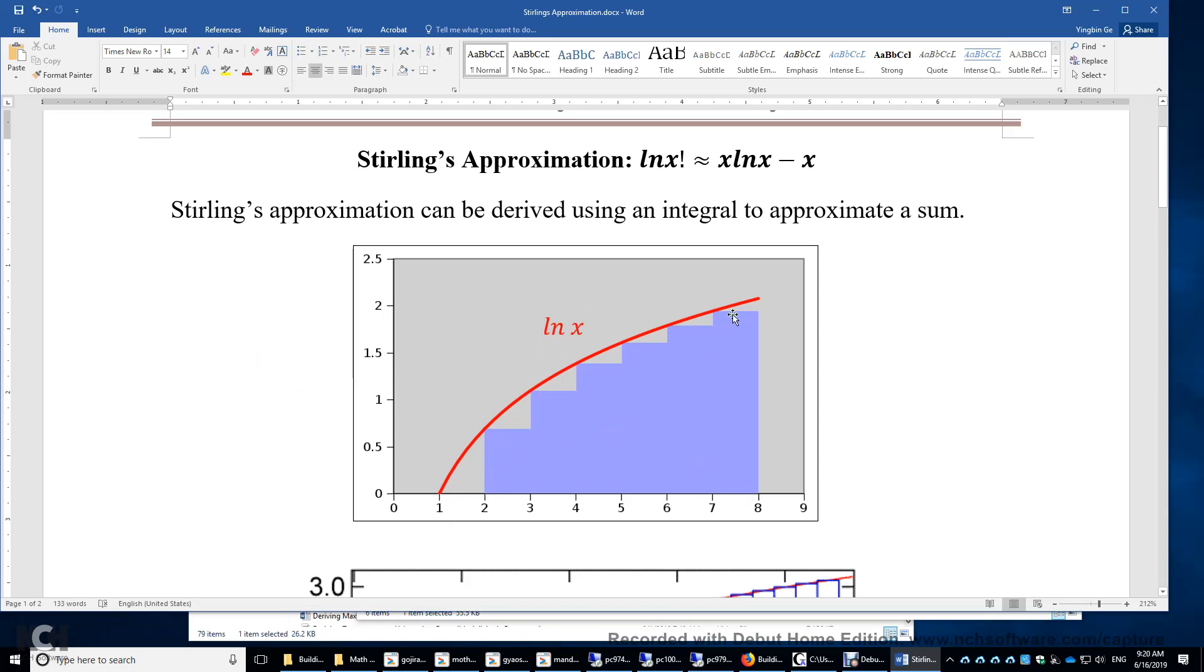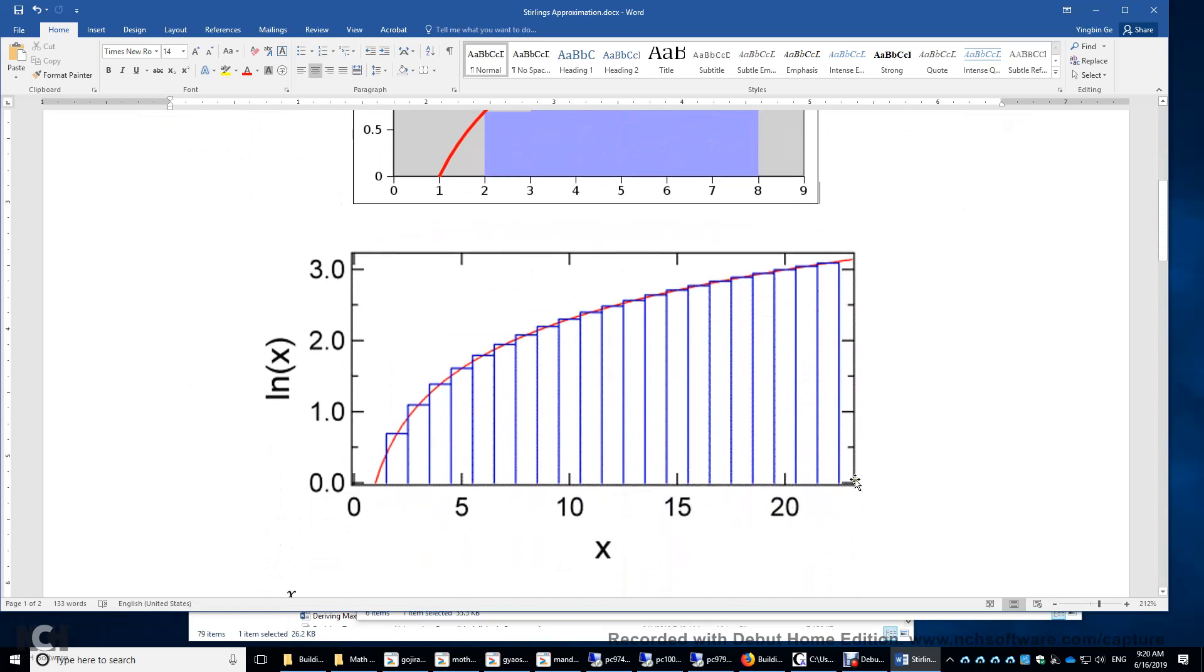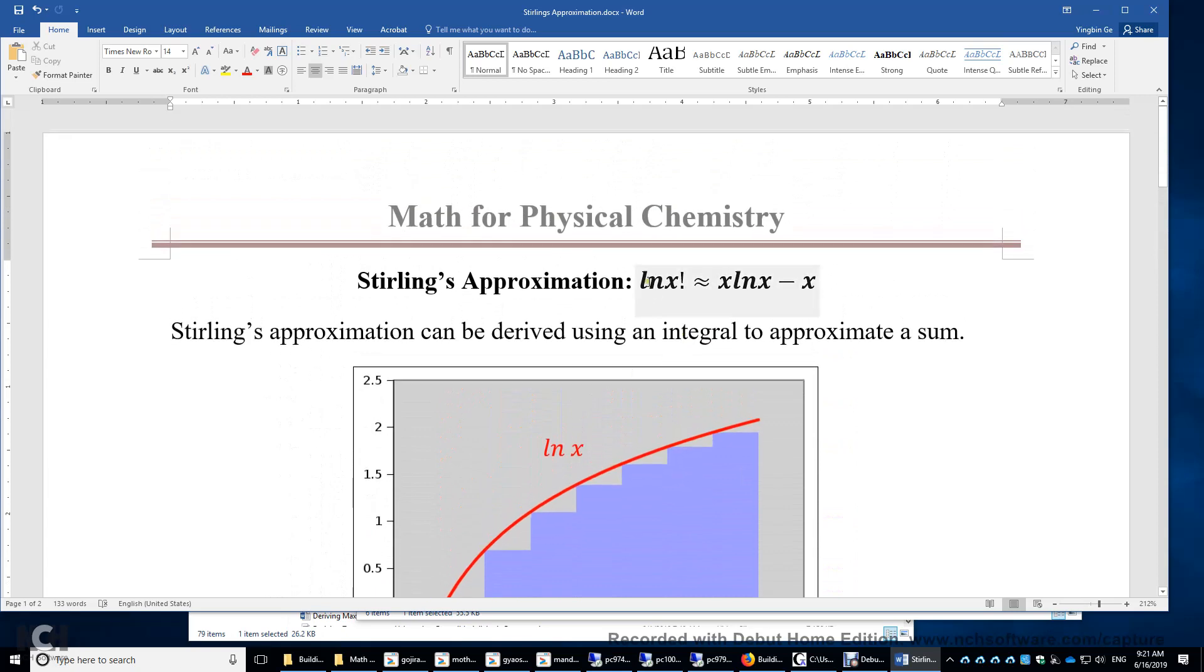So you can see, of course, there is error. The gray areas correspond to the error that's not accounted for. But when x is bigger, in this case x equals 23, and then you can see the blue bars can be used to approximate the integral of this ln x and vice versa. So again, when x is large, we can use this approximation.